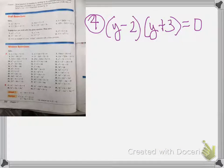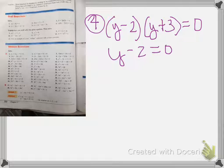So let's take a look at number 4. So we're going to set each one of these equal to zero. So I'll have y minus 2 equals zero, and I'll have y plus 3 equals zero.